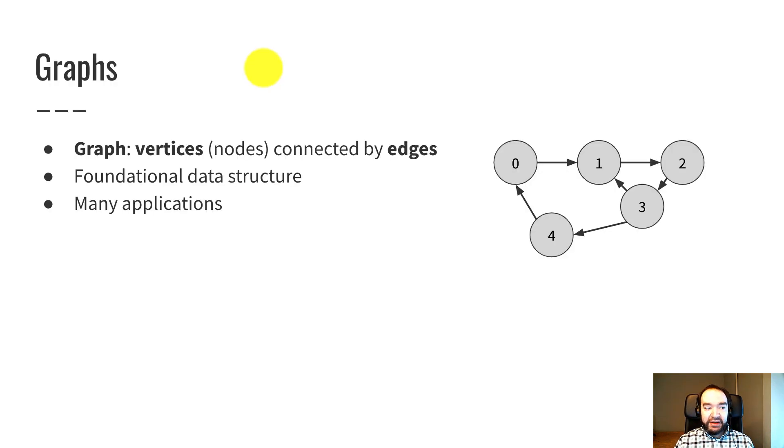First, we're just going to introduce the basic idea. So a graph is sketched on the right. It looks like this. And what's going on in a graph is there are vertices, which are these circles. Those represent some kind of thing, some concept that we're modeling, and edges, which are the arrow connections between the vertices.